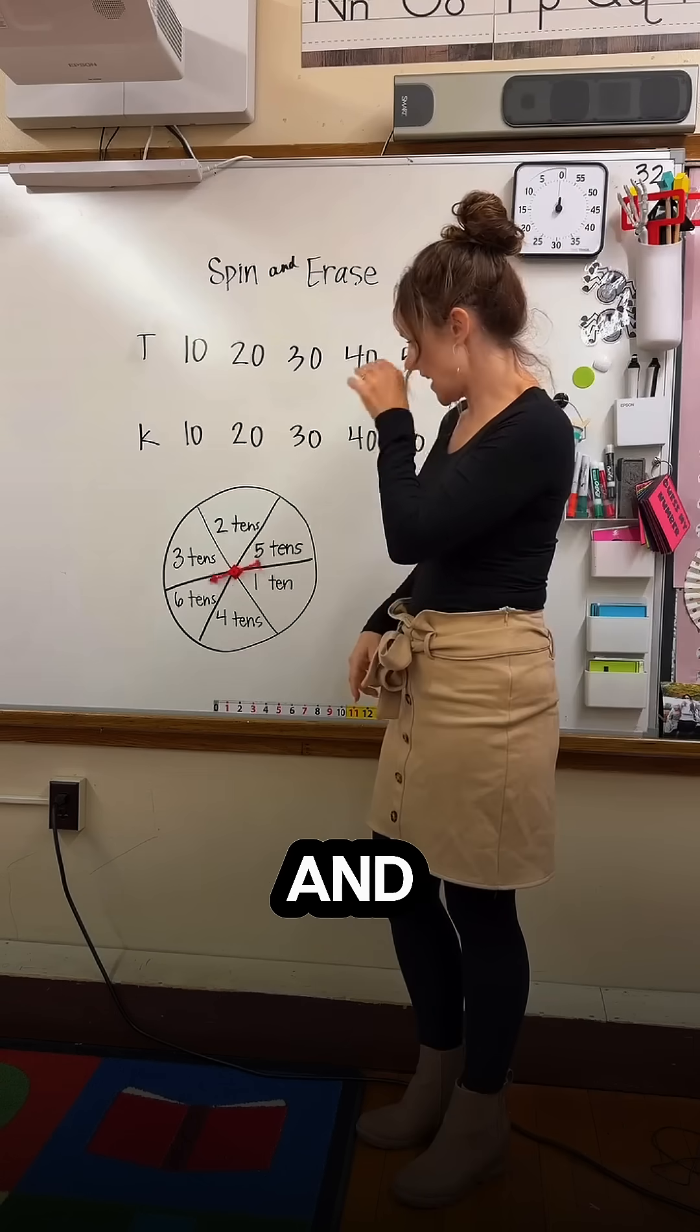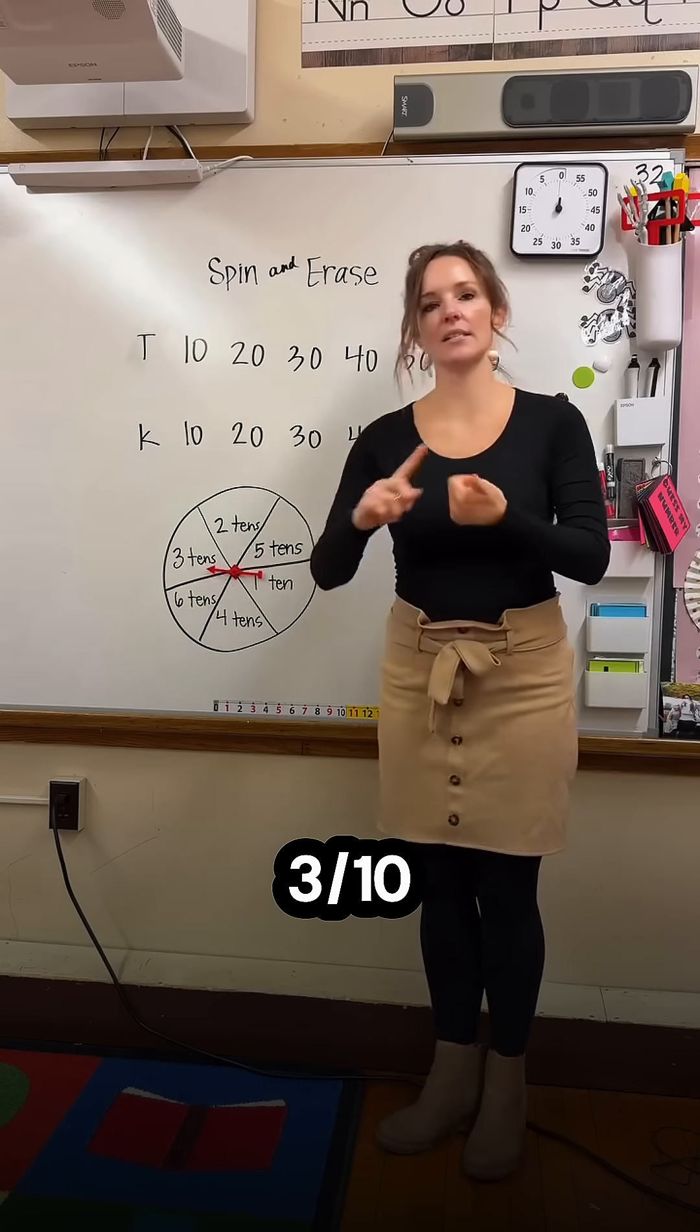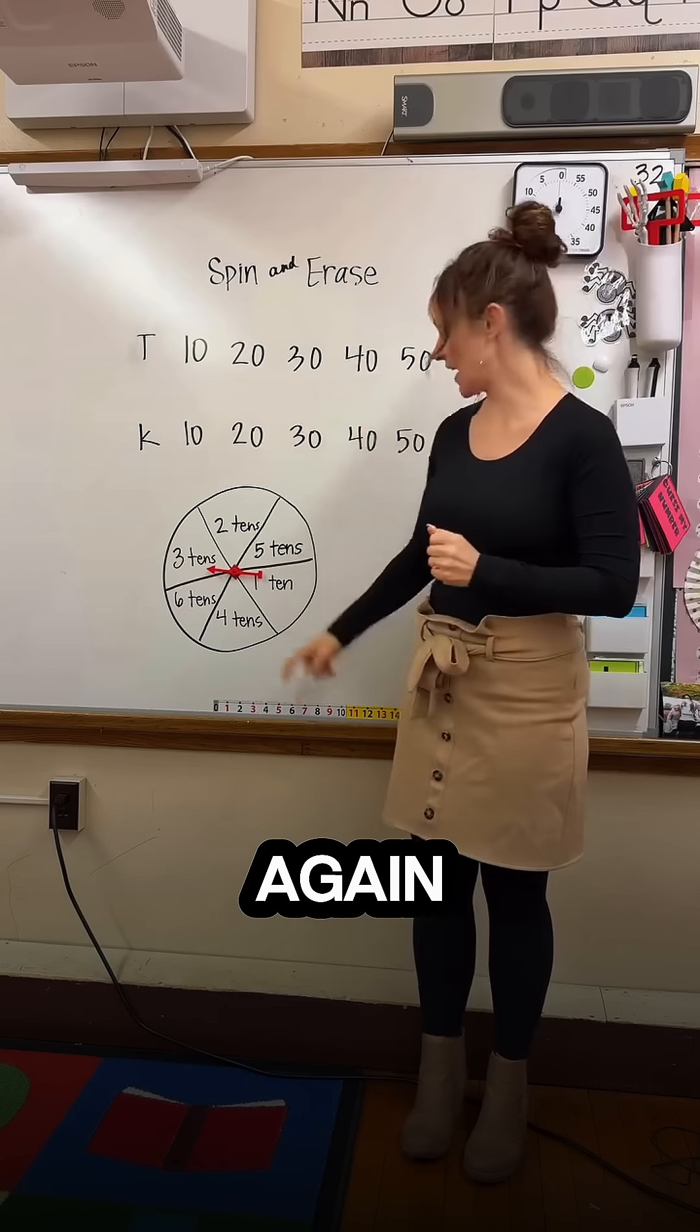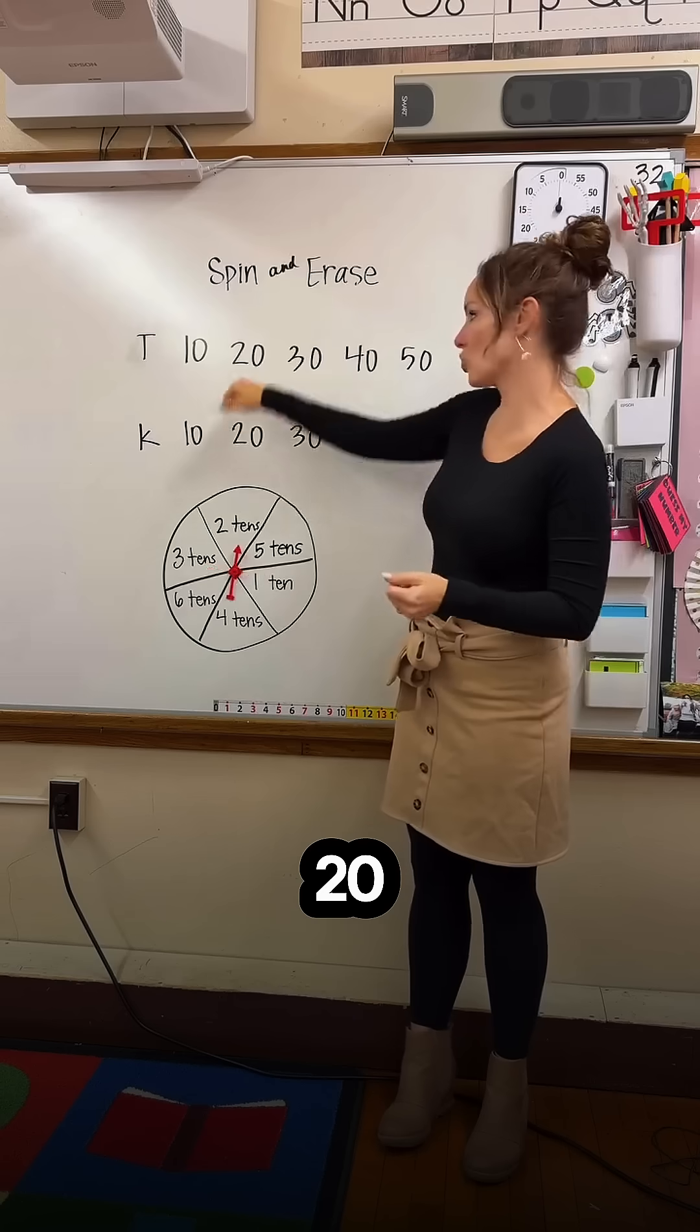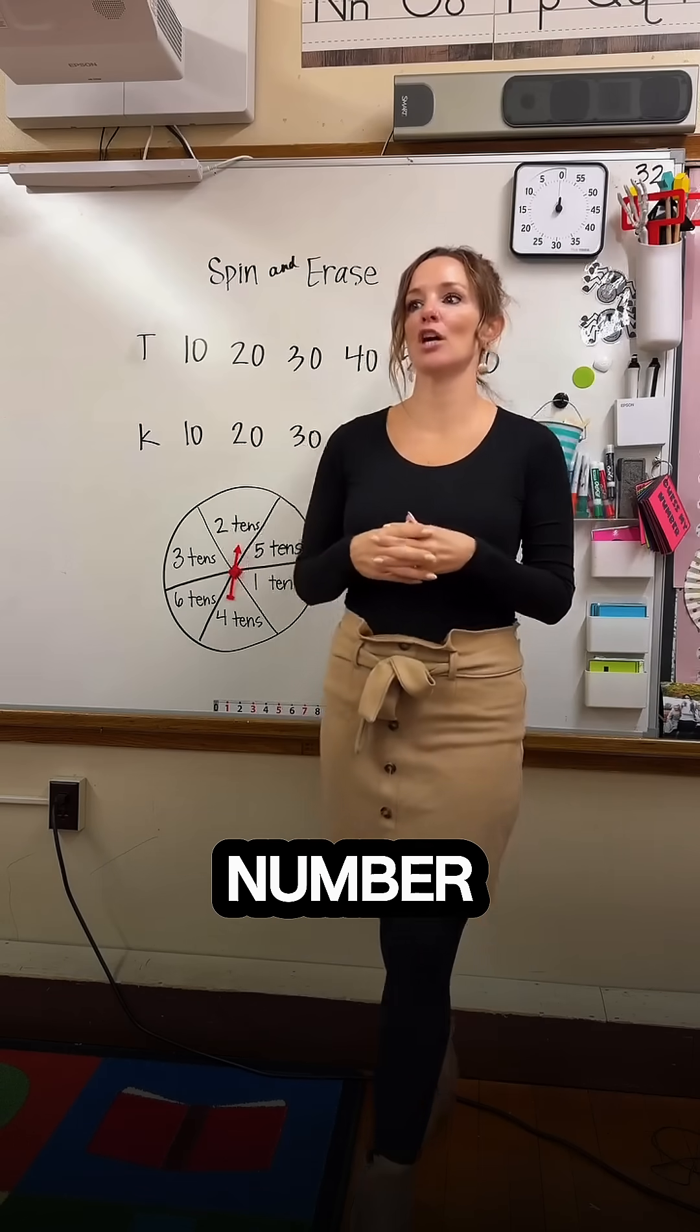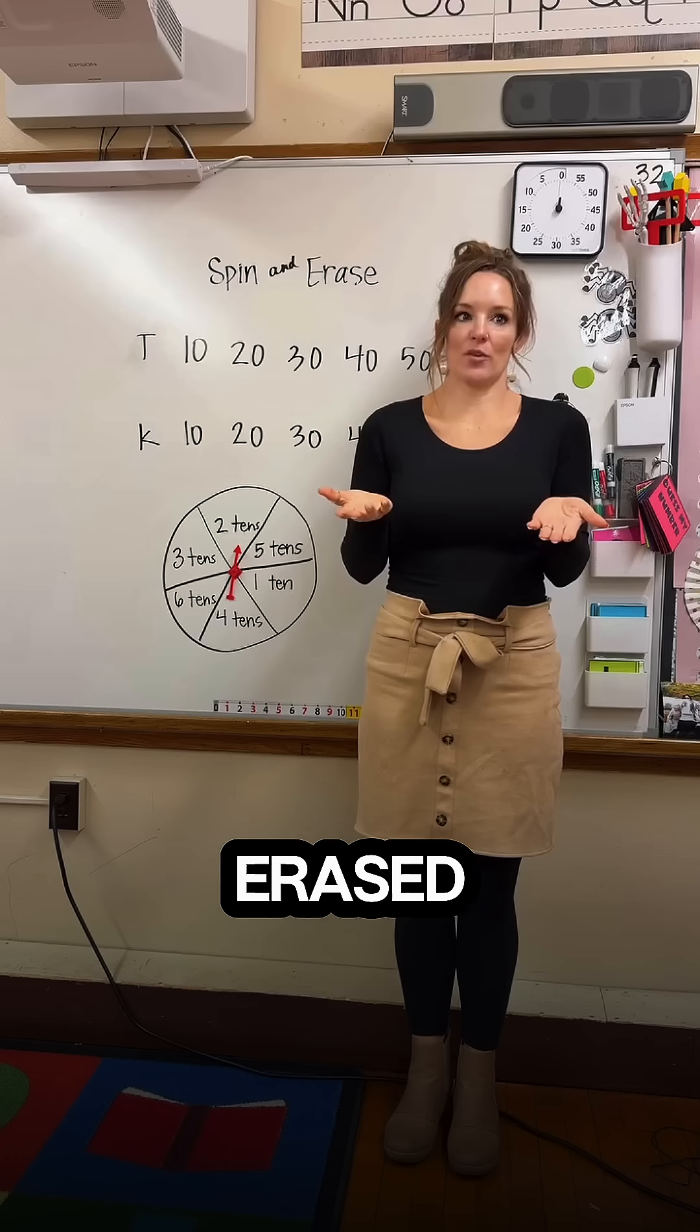You're going to spin, and let's just say it's three tenths. Ten, twenty, thirty. You would erase thirty, then you would spin again. Two tenths, you would erase twenty.